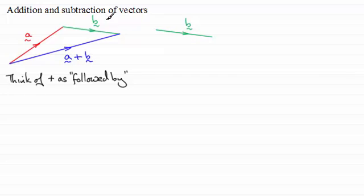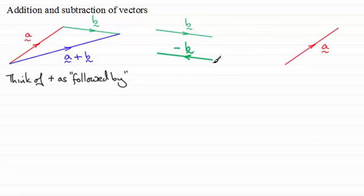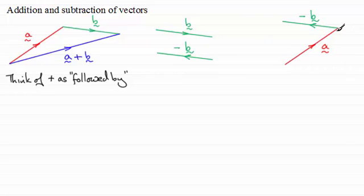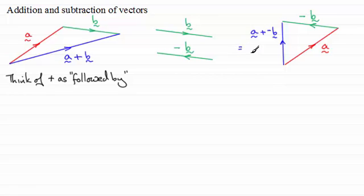When it comes to subtraction of vectors, let's take the vector b. The vector minus b would be a vector in the opposite direction but the same length. So if I take vector a and this time take the vector negative b and put it on the end of a, I end up doing a plus minus b. That's the vector from here to here — a followed by negative b. The plus minus is replaced by minus, so this is exactly the same as the vector a minus the vector b.